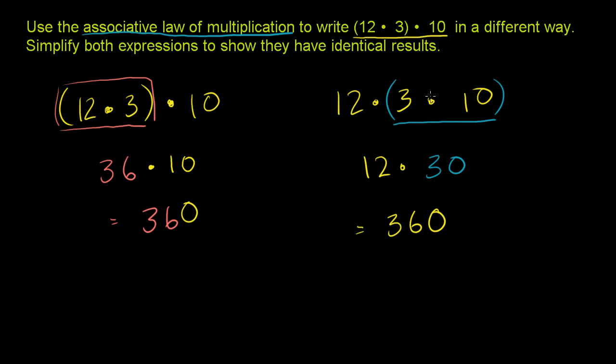So it didn't matter how we associated the multiplication. You could do the 12 times 3 first, or you could do the 3 times 10 first. Either way, they both evaluated to 360.